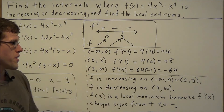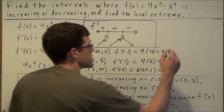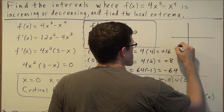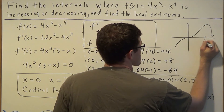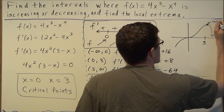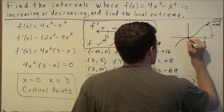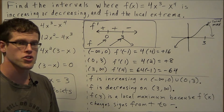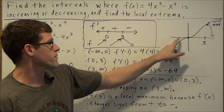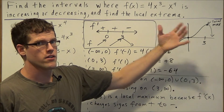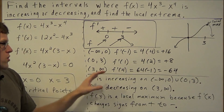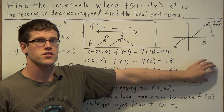Before concluding, we can look at a sketch of the original function f of x — you could type it into a graphing calculator. The function increases from negative infinity to zero, changes concavity at zero but continues to increase up to three where it reaches its local maximum, and then decreases from three to infinity. All of the information we found is supported by the sketch of the function.